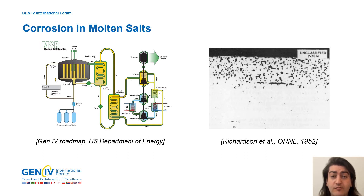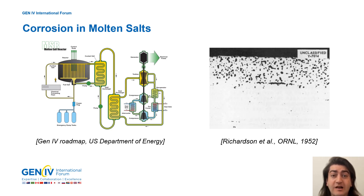In the field of molten salt corrosion, selective dissolution of alloying elements is mostly discussed in terms of one-dimensional diffusion of the active element from the bulk to the surface, which necessarily involves counter-diffusion of metals.